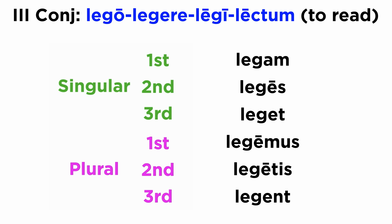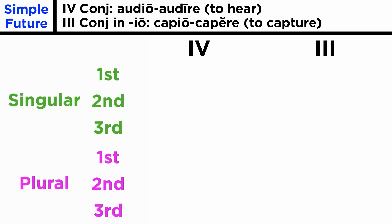The verbs in io will conjugate exactly the same way. Don't forget to switch the vowel from the first person to second. Let's look at audio audire, a true fourth conjugation, alongside capio capere.